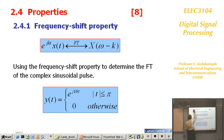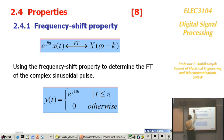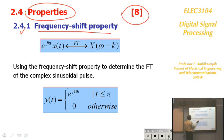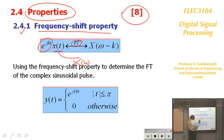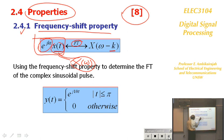Now we look at the properties of Fourier transform. The first property is the frequency-shifting (modulation) property: if x(t) has Fourier transform X(ω), then x(t)·e^(jkt) has Fourier transform X(ω − k). That is, multiplying a signal by a complex exponential in the time domain shifts its Fourier transform by k in the frequency domain. You don't need to memorize this — it will be given in the exam, but you need to know how to apply it.